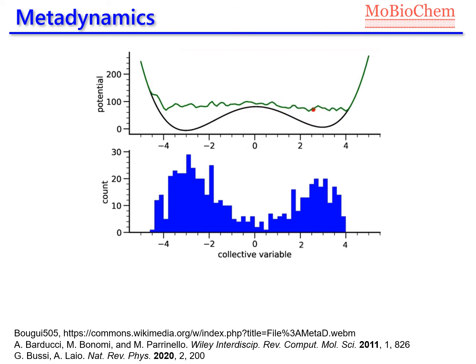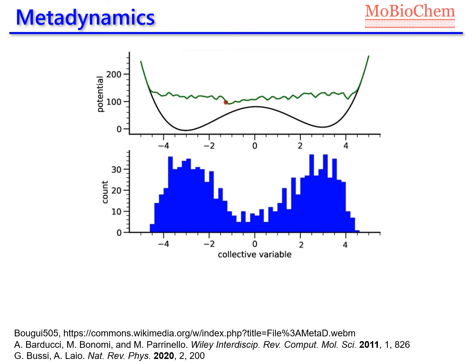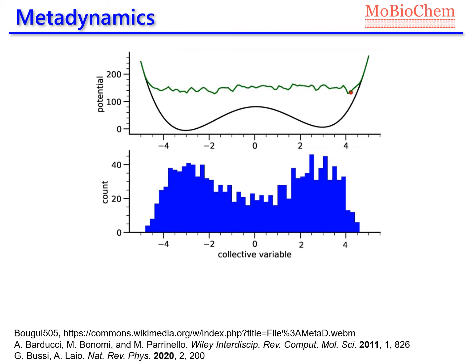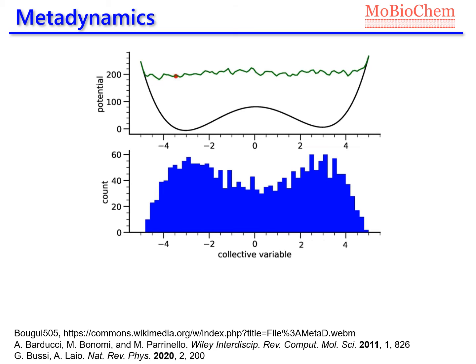When this count of Gaussian functions is plotted over time, it can be observed that for long simulation times, the shape of the Gaussian tends toward that of the potential energy surface.